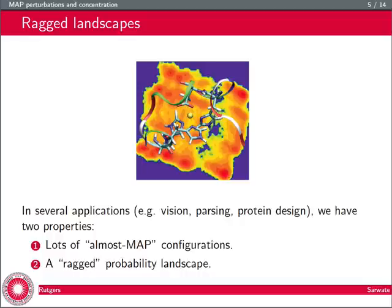In problems such as image segmentation, we have two key properties. First, there are many almost MAP configurations—many configurations almost optimal in maximizing the potential function. Furthermore, these almost maxima are not close to each other. There are many mountain peaks in the landscape, as pictured here. What you'd like to do is get some of these almost optimal configurations, because the maximum a posteriori configuration is not necessarily the best one.